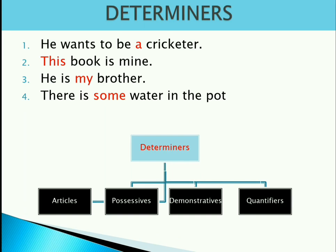There are four types of determiners: articles, possessives, demonstratives, and quantifiers. In articles we study definite and indefinite articles like a, an, and the. In possessives we study words like my, his, your, its, their. In demonstratives we study words like this, that, these, those. And in quantifiers we study words like few, little, so many, some, any, several, other, another.